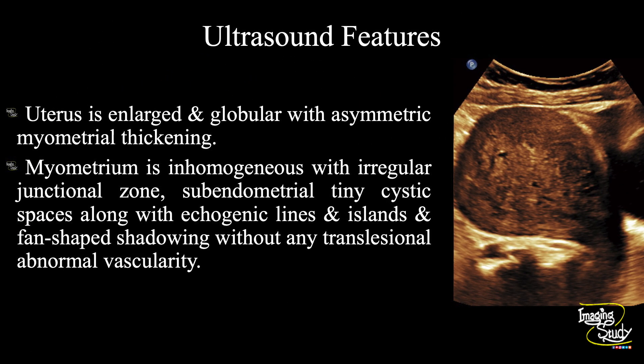In summary: an enlarged globular uterus is seen with asymmetric thickening of the myometrium. The myometrium is inhomogeneous with an irregular junctional zone, sub-endometrial tiny cystic spaces, along with echogenic lines and islands with fan-shaped shadowing, and without any abnormal vascularity on Doppler. These features concluded as a case of adenomyosis.